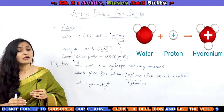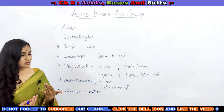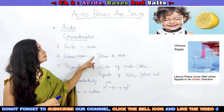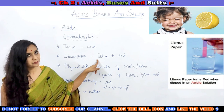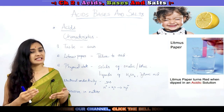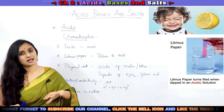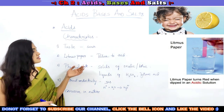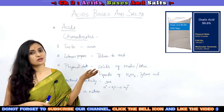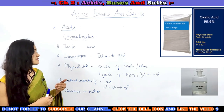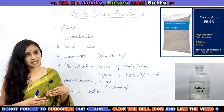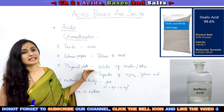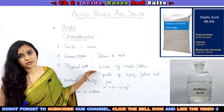Now let us discuss the characteristics of acids. As we discussed, acids have a sour taste. When tested with litmus paper, blue litmus turns to red. If a litmus paper changes its color from blue to red, it indicates that a particular substance is an acid. Coming to physical state, few acids exist in solid state — for example, oxalic acid and tartaric acid — and few substances exist in liquid state at room temperature, for example sulfuric acid and nitric acid.